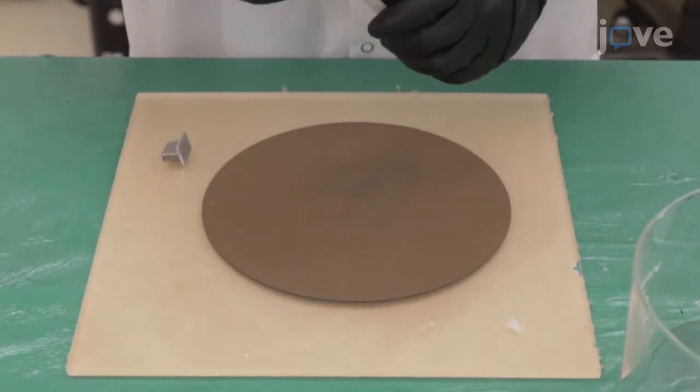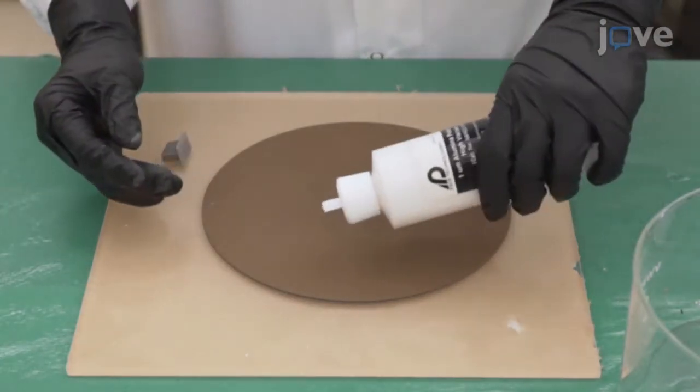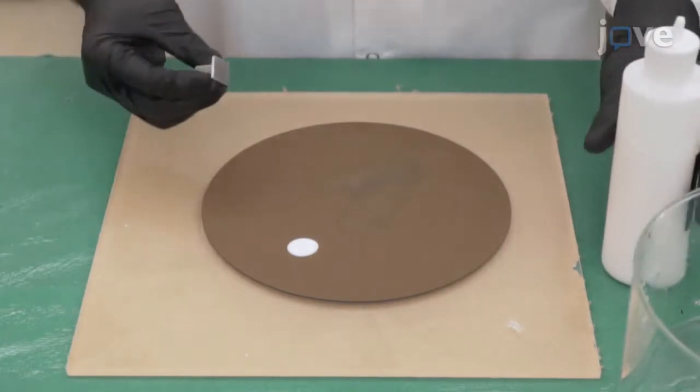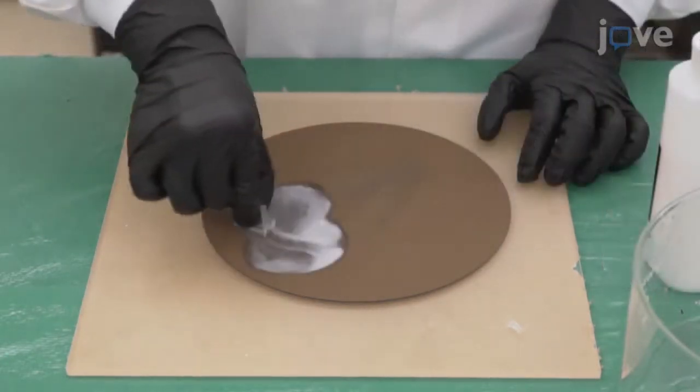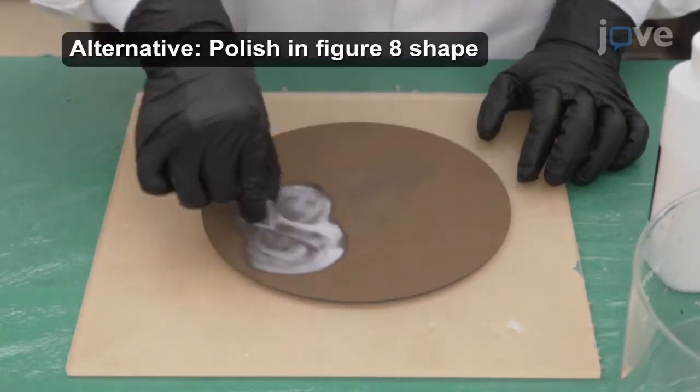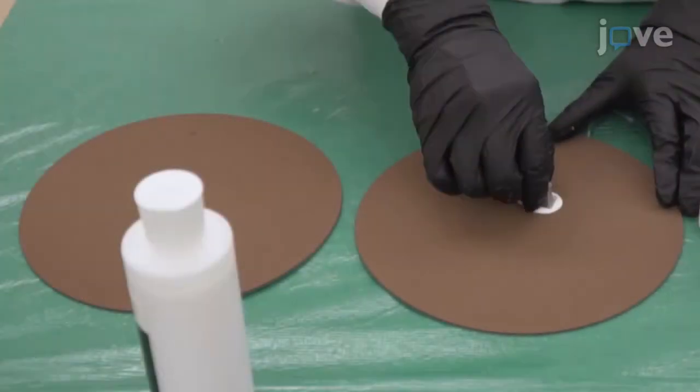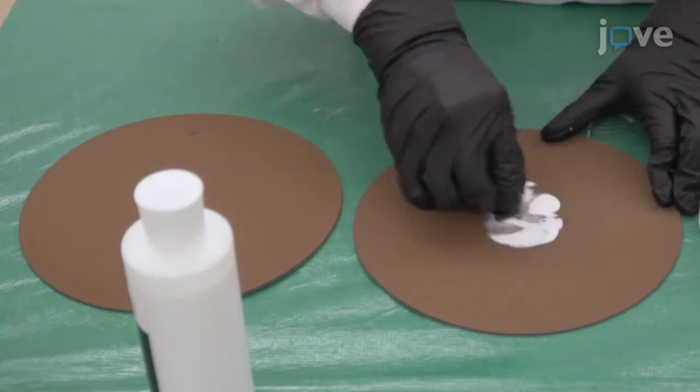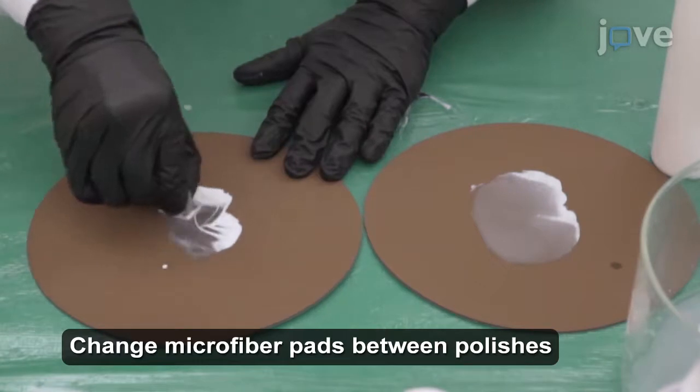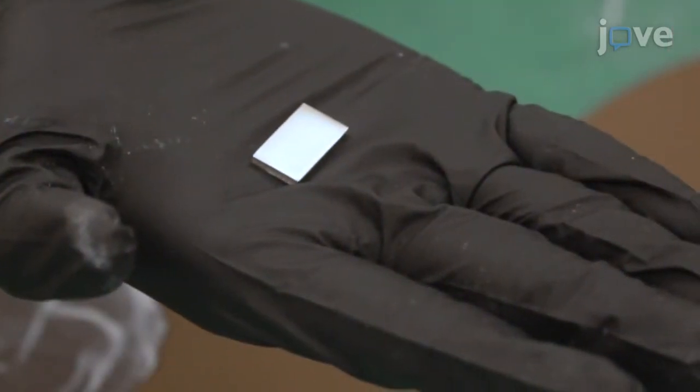After the last grinding, pour one ounce of a 1 micrometer alumina suspension onto a clean microfiber cloth pad and polish the sample in one direction until the scratch lines have been removed. Then polish the surface with 0.3 and 0.05 micrometer polishing suspensions until a mirror finish has been achieved.